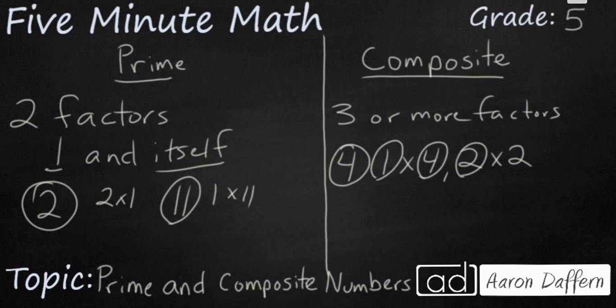Another example of a composite number would be twenty-one. If I wanted to make twenty-one, I could multiply one times twenty-one. I could multiply three times seven. So twenty-one has four factors: one, twenty-one, and then three and seven.